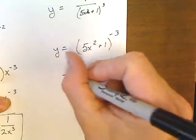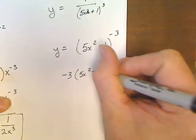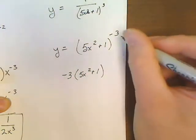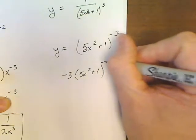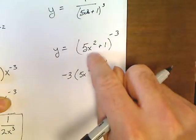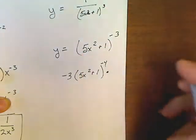Multiply by negative 3. The negative 3 subtract 1 becomes negative 4, times the derivative of the inside, which would be 10x.